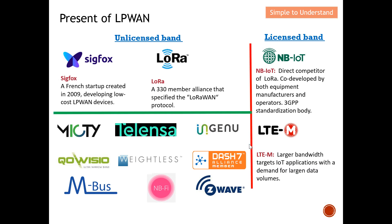Let's come to the present of LPWAN. I've separated the landscape into two sections: on one side are the unlicensed LPWAN players, and on the other side are the licensed LPWAN players. For licensed LPWAN, we have NB-IoT and LTE-M — these two technologies are controlled by 3GPP and use the licensed band to transmit. On the unlicensed side, the two main players are Sigfox and LoRaWAN. Along the years, more and more unlicensed LPWAN technologies have appeared and command certain market share.